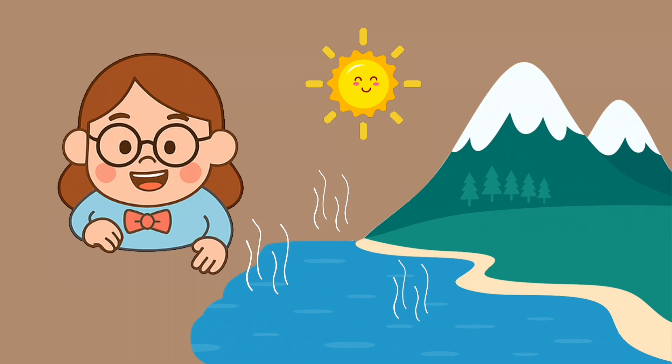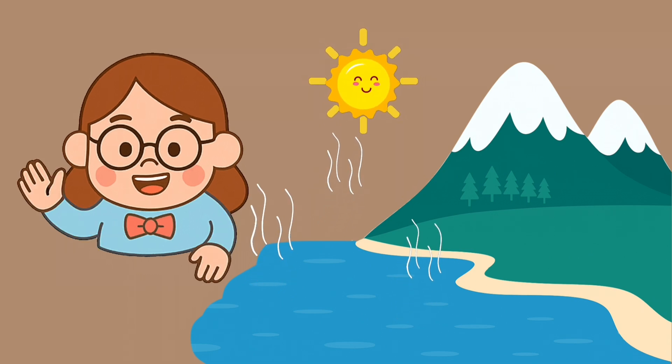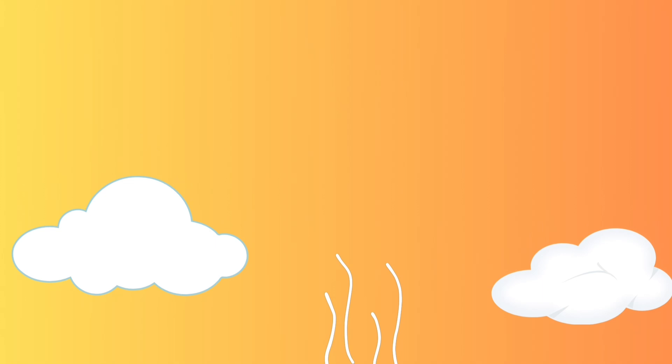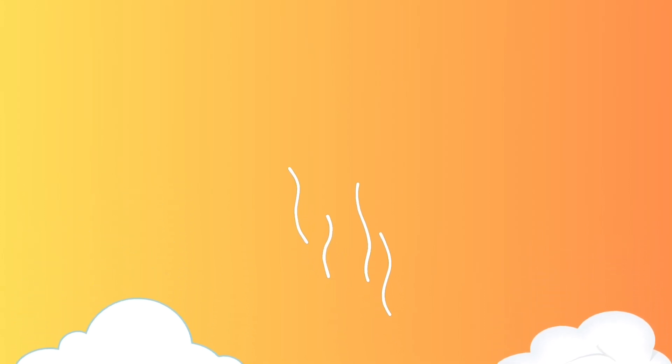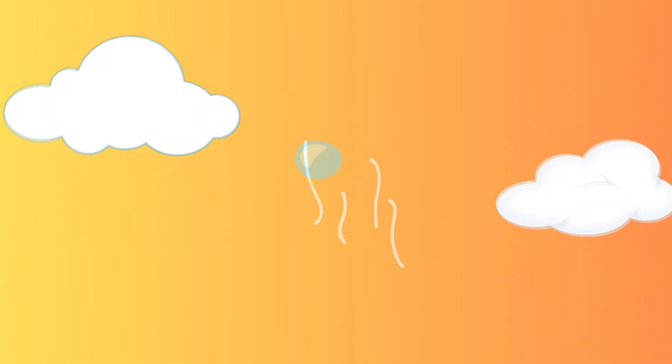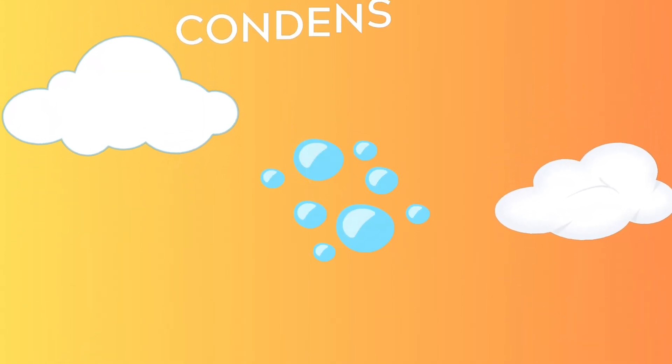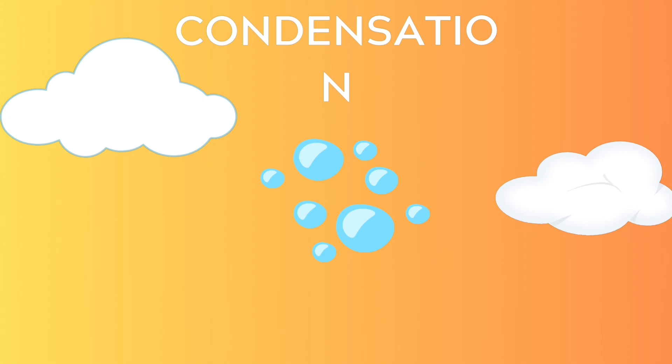As the water vapor rises high into the sky, it gets cooler and cooler. And guess what? It starts turning back into tiny water droplets. That's called condensation.